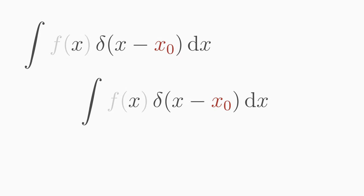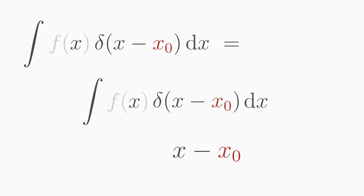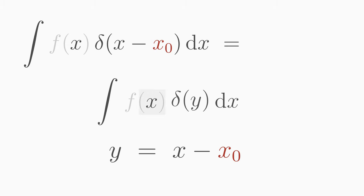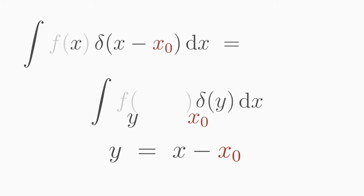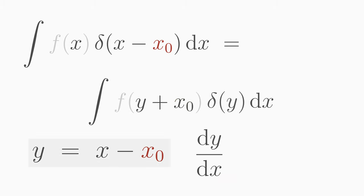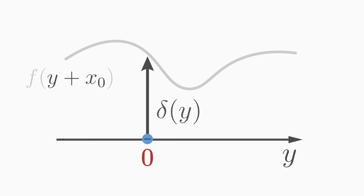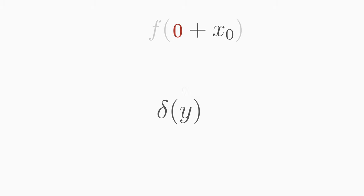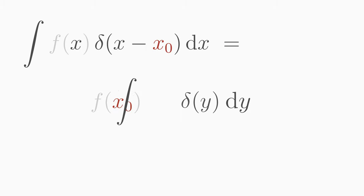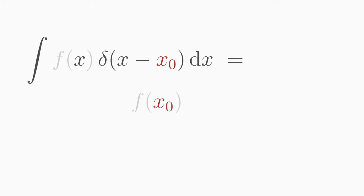You can prove this by substituting y equals x minus x₀. The x minus x₀ in the delta function becomes y. The x in the function becomes y plus x₀. The derivative of y with respect to x is 1, so dx changes to dy. As we know, delta of y picks the value of the function at the point y equals zero. Therefore, the integral yields the value f(x₀).